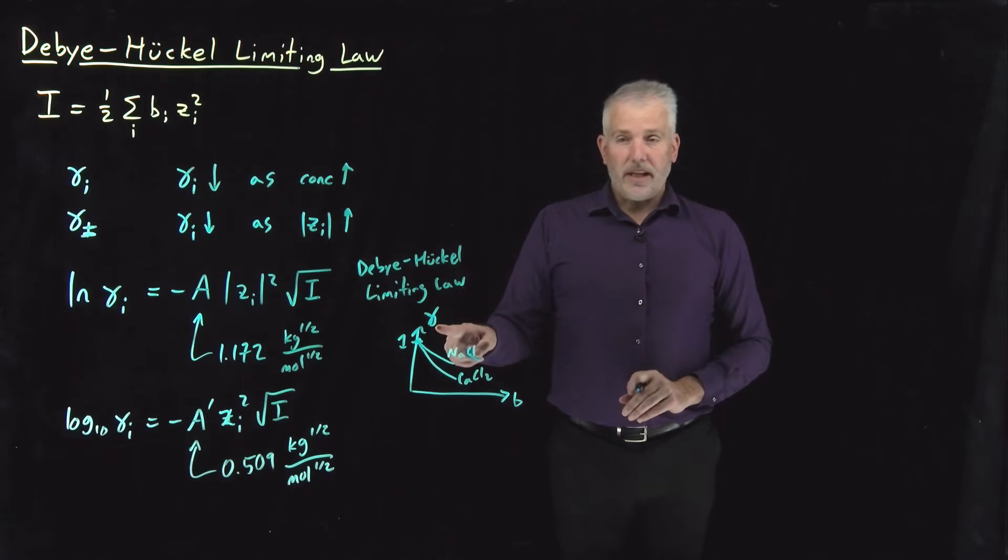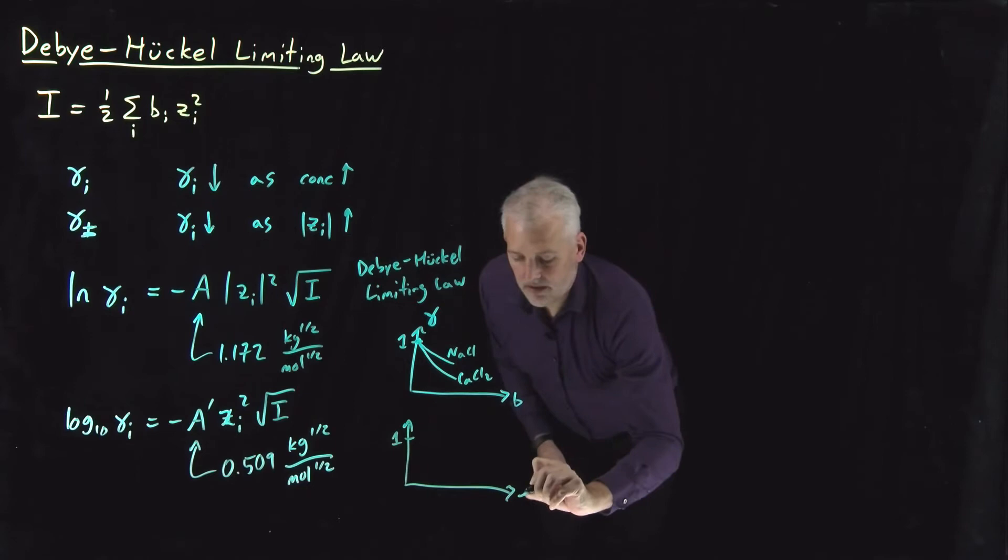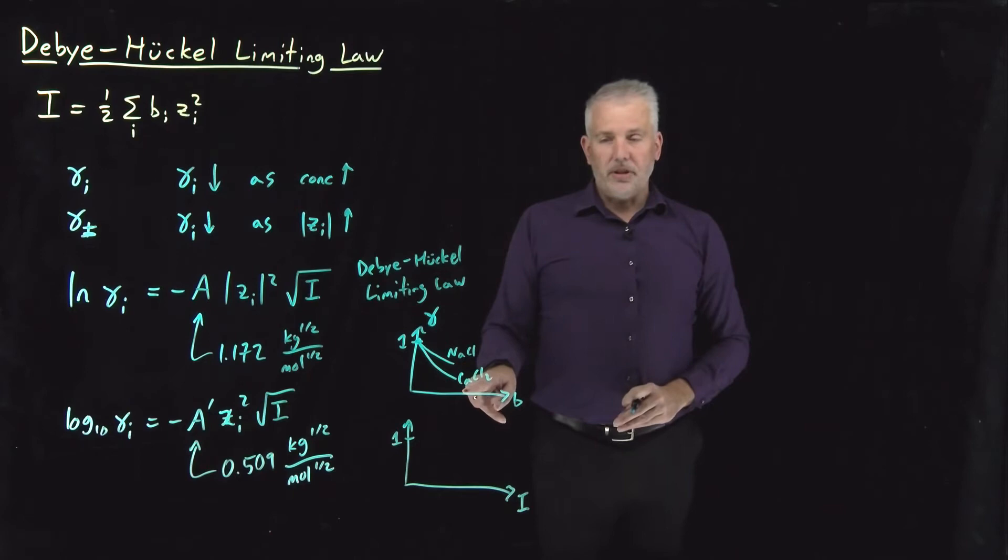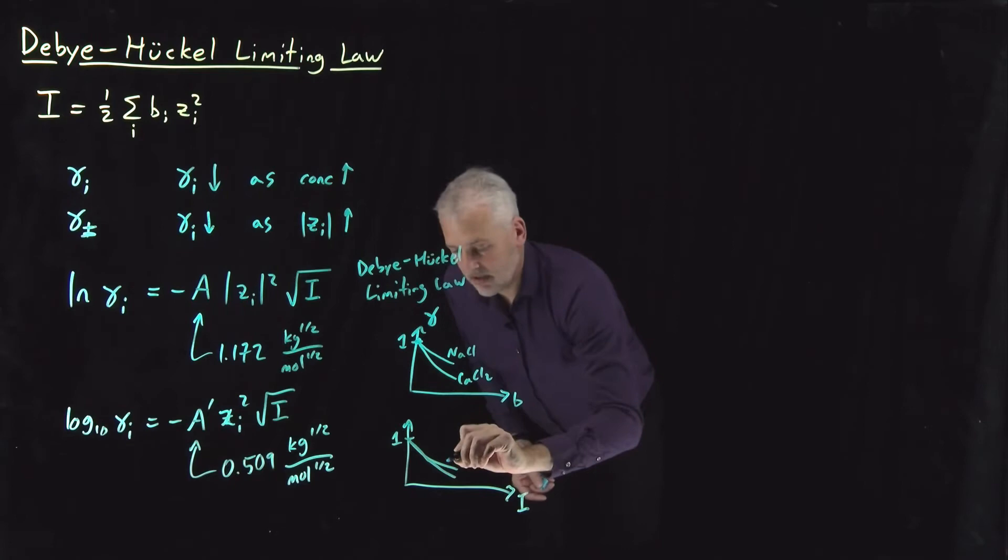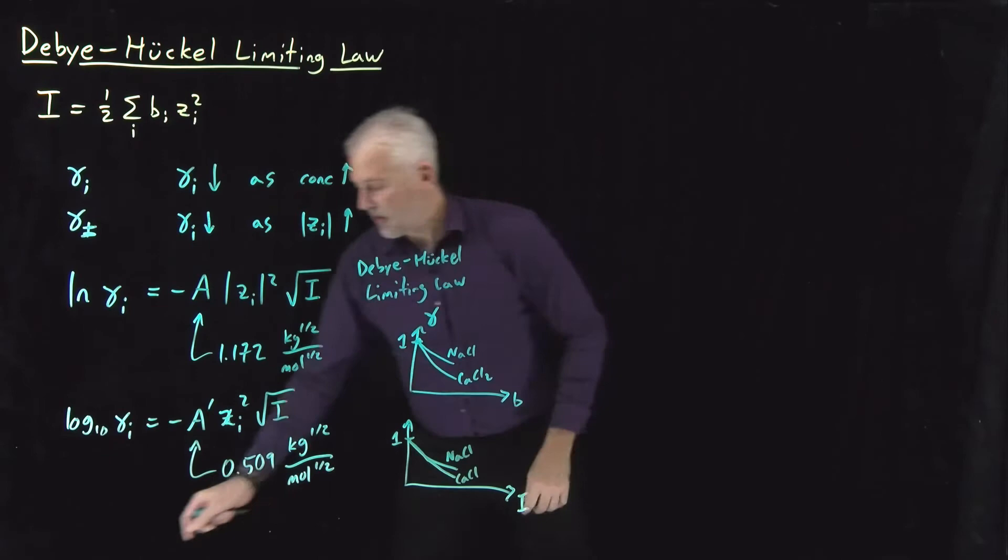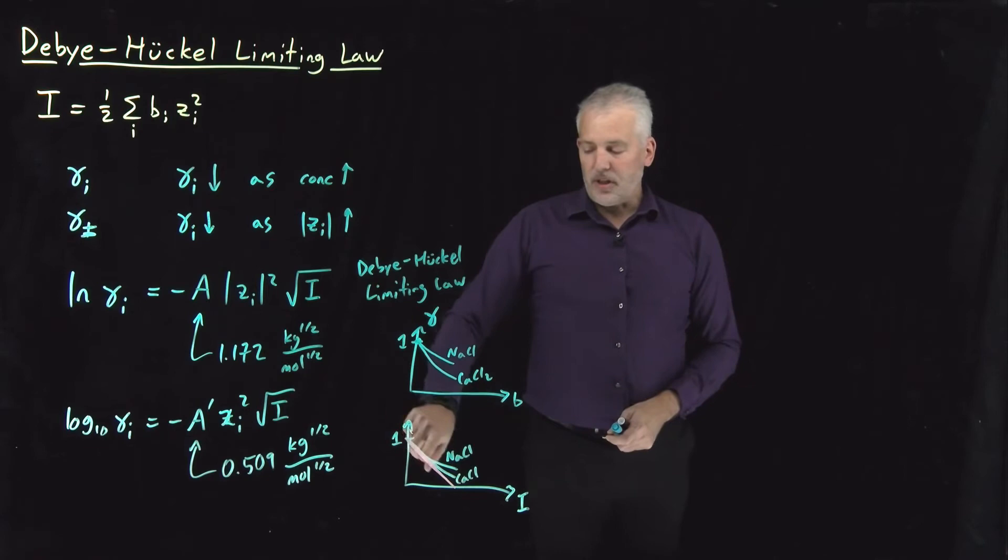If I express the activity coefficient in terms of ionic strength rather than molality, what we'll find is, if I plot those two curves now versus ionic strength, remember the ionic strength of a calcium chloride solution is larger than its concentration. That's going to shift this curve over to the right. The sodium chloride solution, the calcium chloride solution will be much more similar to each other. In particular, at low concentrations, I can approximate them both with the same line.